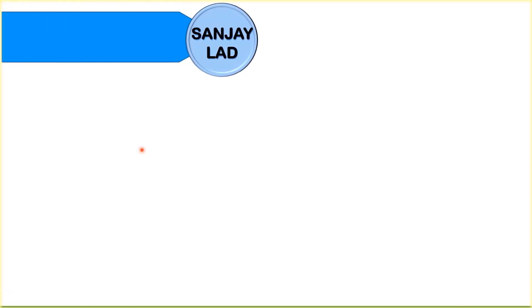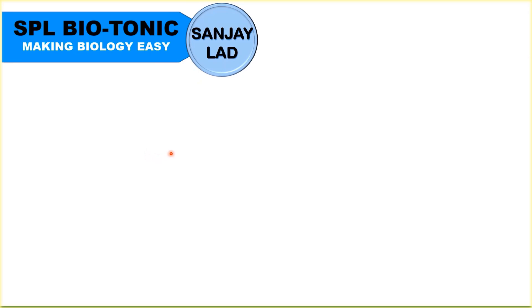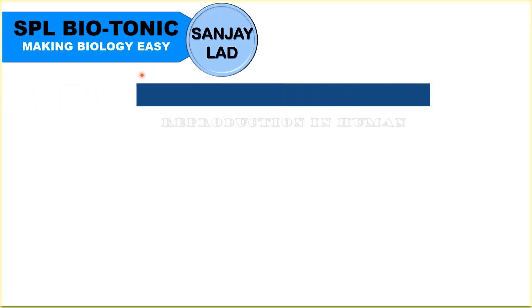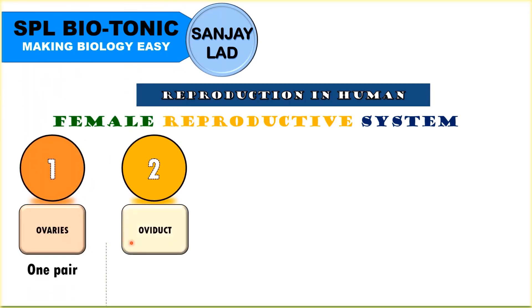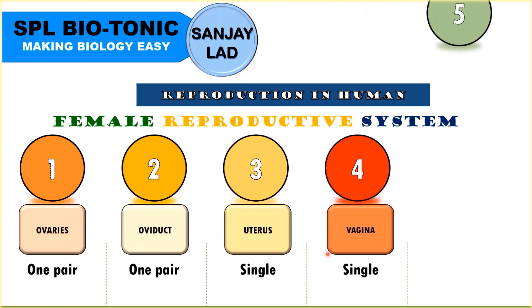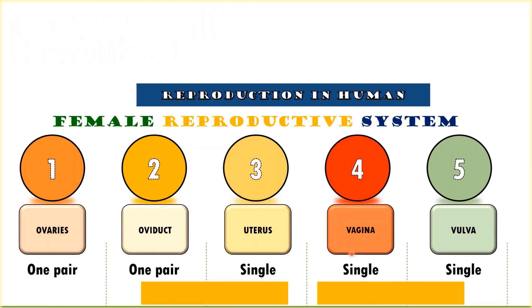Hello everyone, welcome to one more video of Special Biotonic, a channel to make biology's subject easy. Today we will talk about the female reproductive system. This system consists of a pair of ovaries, a pair of oviducts, uterus, vagina and vulva. Mammary glands are also part of this system. Let us understand all parts of this system in detail so that we can face any question coming from this topic. So watch the video till the end.